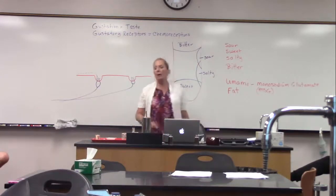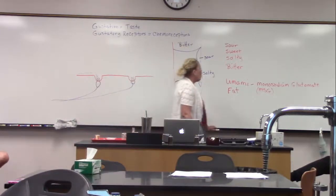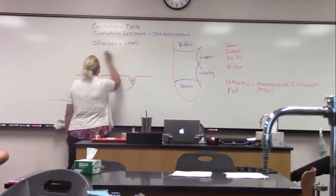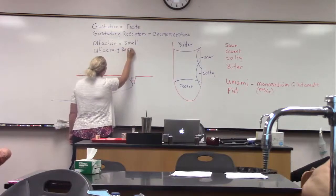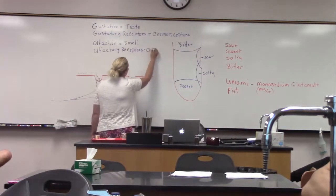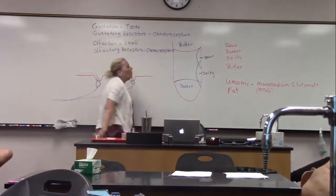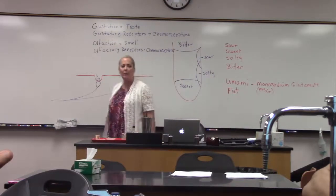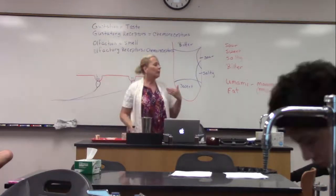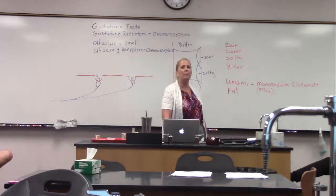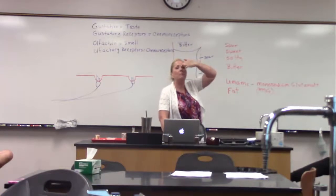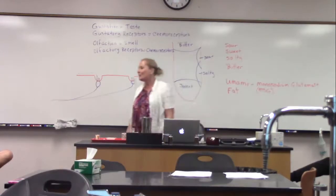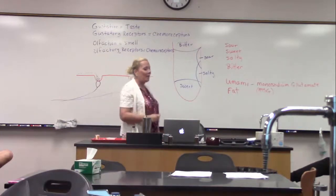The next type of testing we're going to do today is olfaction, which has to do with smell. Our olfactory receptors are also chemoreceptors — just like in the mouth, they respond to chemicals that have dissolved in water. When we smell something, those chemicals go up into the nasal passage. Way up there, kind of between the eyeballs but back a little further, is where our olfactory receptors are located. That's why if you want to smell something really well, you sniff hard to get all those chemicals way up into the nasal passage.